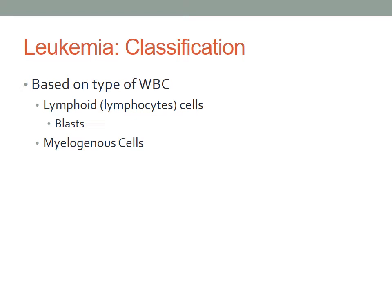In myelogenous leukemia, this type affects the myeloid cells. Myeloid cells give rise to red blood cells, white blood cells, and platelet-producing cells.